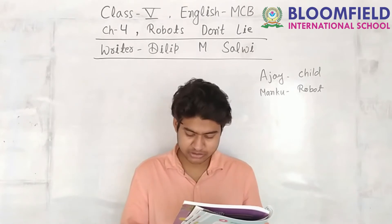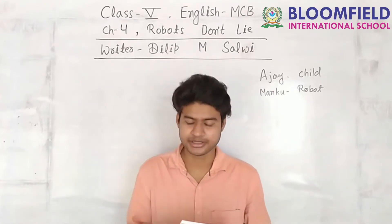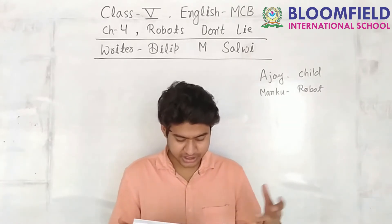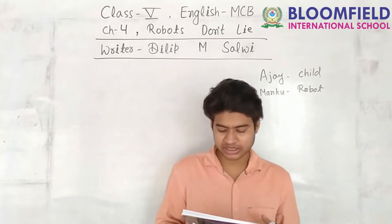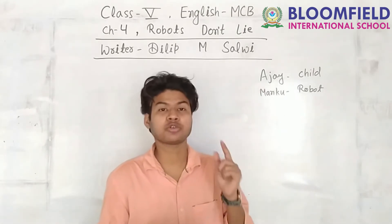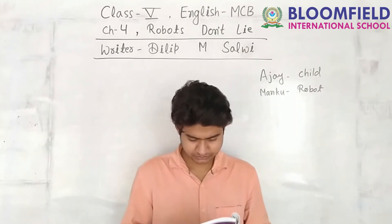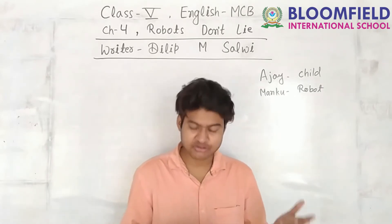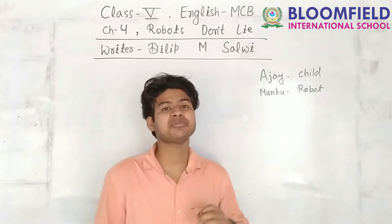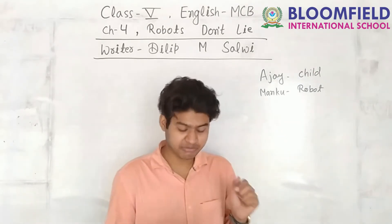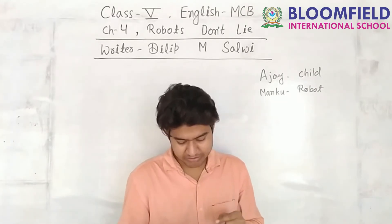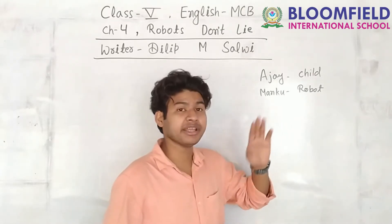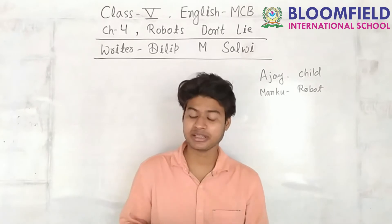Ajay's father says, 'You haven't even begun your maths project — no more excuses, get down to it.' After a while the doorbell rang. Ajay thought it was Rinesh but said: 'If I don't do my work now Manku will tell dad.' So he instructs Manku: 'If the visitor asks for me, tell him I am not at home.' But Manku is programmed never to lie.